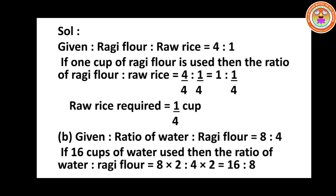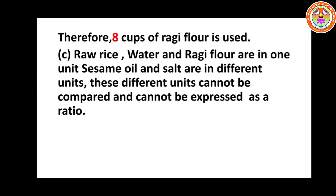Option B: if 16 cups of water is used, how much ragi flour should be used? Given water is 8 cups and ragi flour is 4 cups. Sixteen cups means we double it. So multiply both by 2: 8 into 2 is to 4 into 2 gives 16 is to 8. Therefore 8 cups of ragi flour should be used.